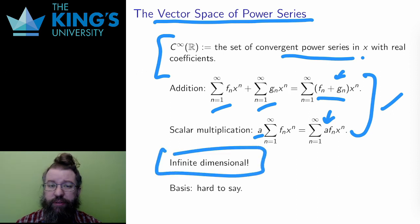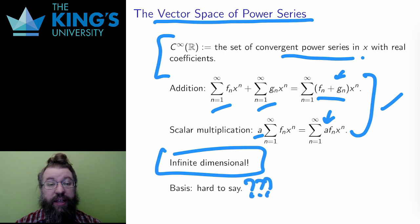This is again an infinite dimensional vector space. What is its basis? This is actually quite hard to say. You might think I could say the same thing as polynomials, 1, x, x squared, and so on. It's true, every power series is a sum with coefficients multiplied by these terms. However,